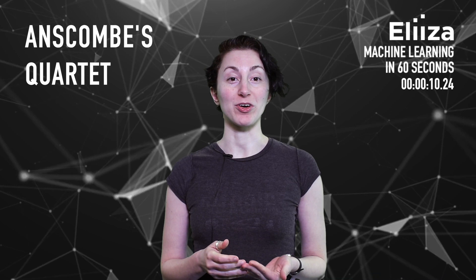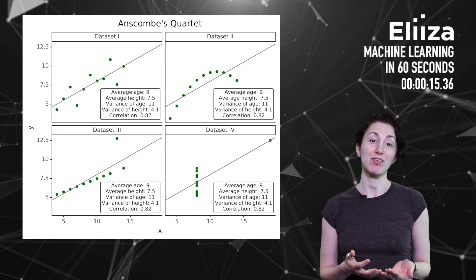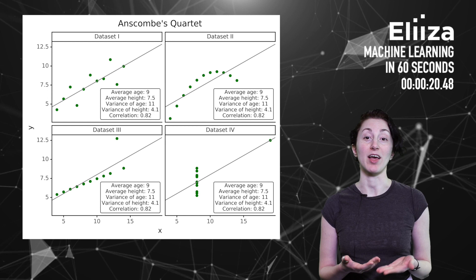In 1973, Frank constructed four datasets that look very different when graphed, but have almost identical key summary statistics, such as averages, standard deviations, and lines of best fit.